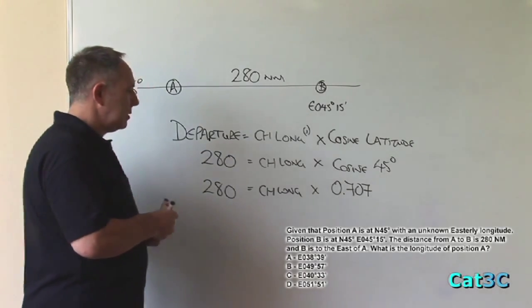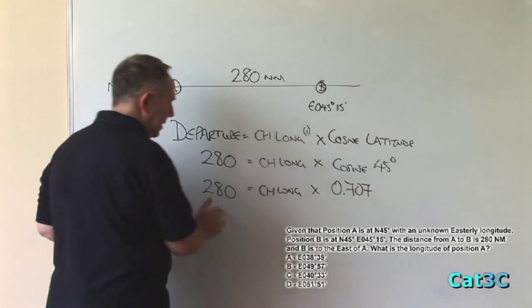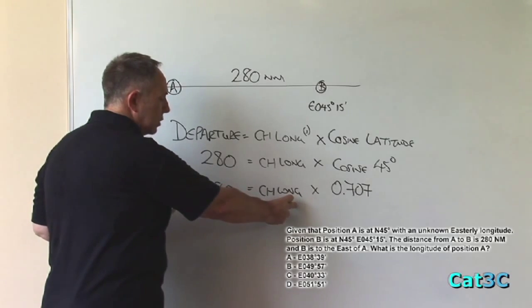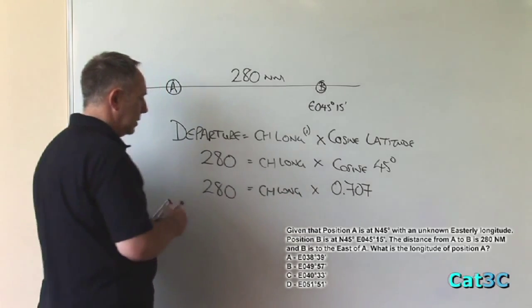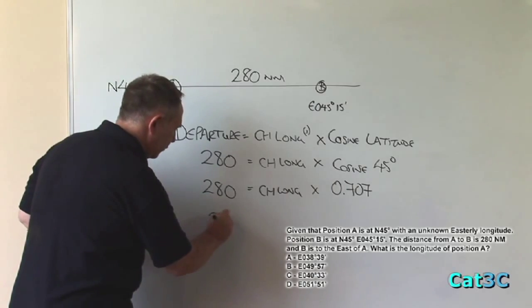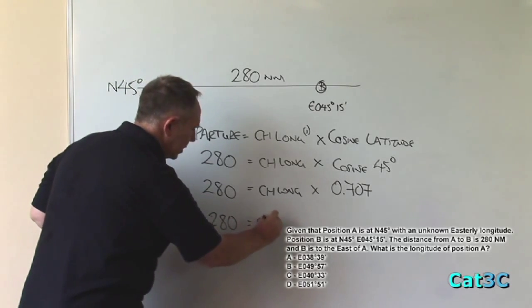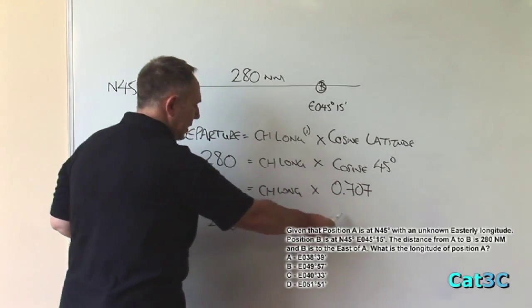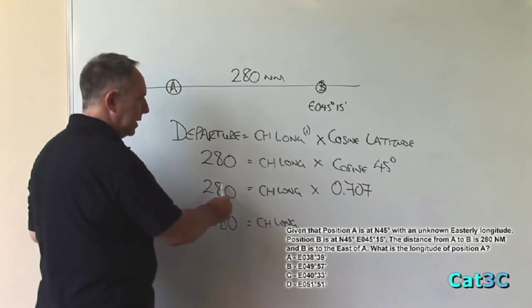What we need to do next is to group the numbers together on one side of the equal sign and the part that we're trying to find out on the other side of the equal sign. So if I put 280 equals change of longitude, then I need to transpose 0.707 over to the other side of the equal sign.